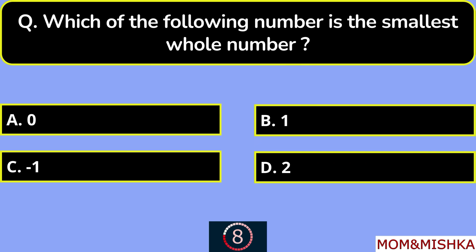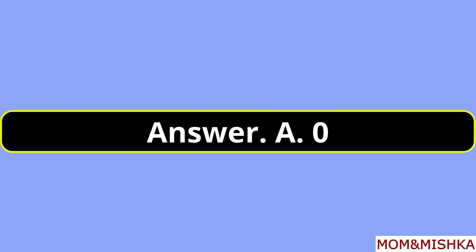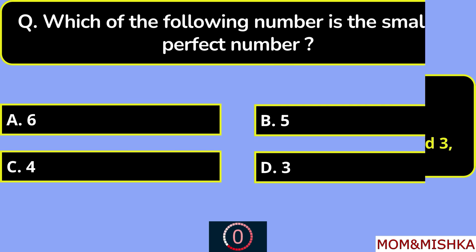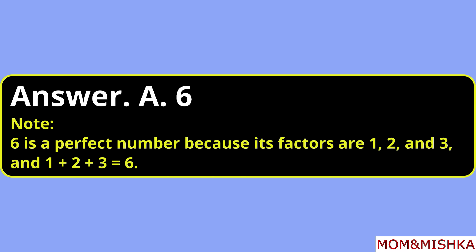Which of the following is the smallest perfect number? The answer is 6. Option A. A perfect number is a positive integer that is equal to the sum of its factors, excluding the number itself. So 6 is the smallest such number.